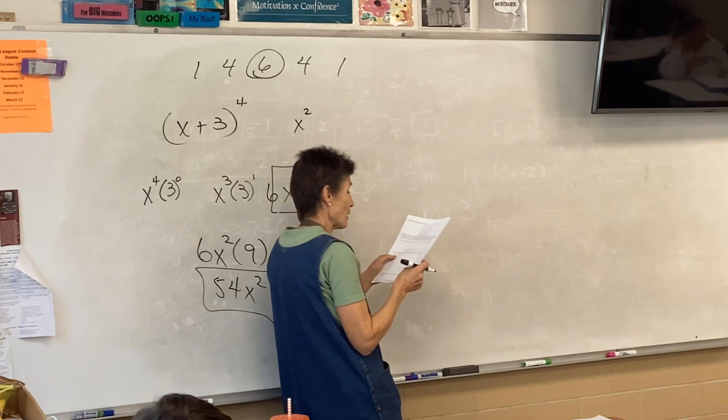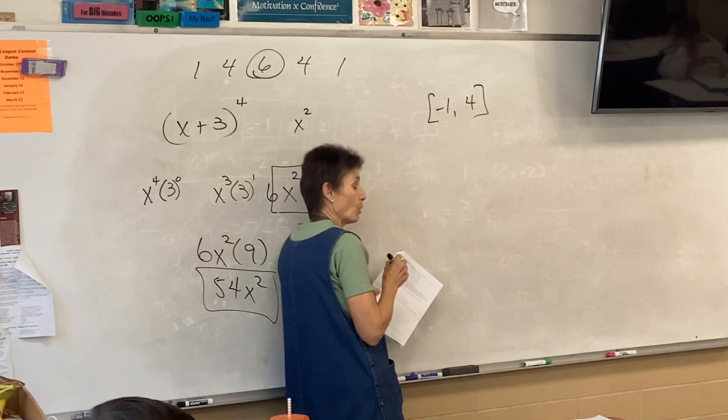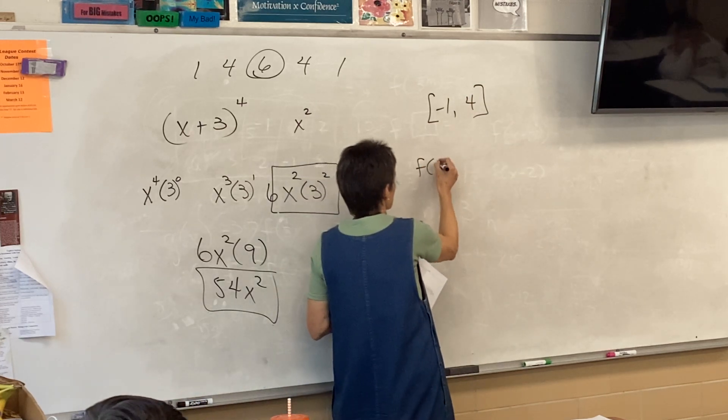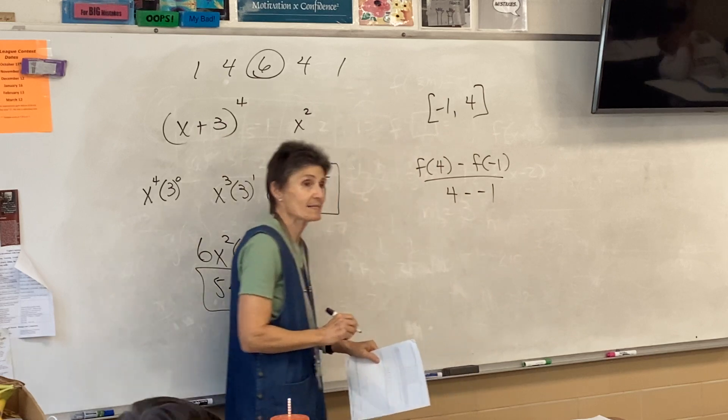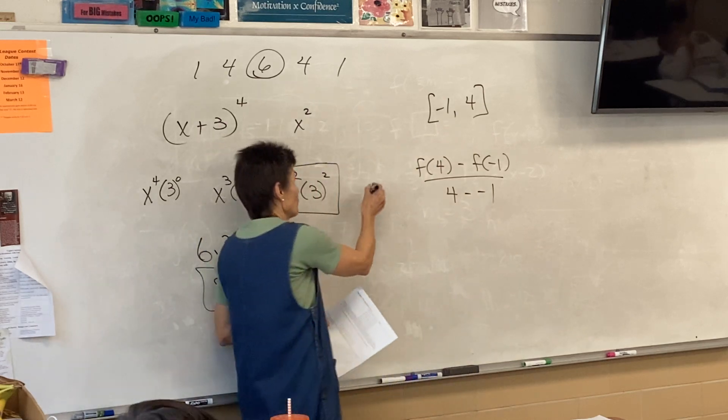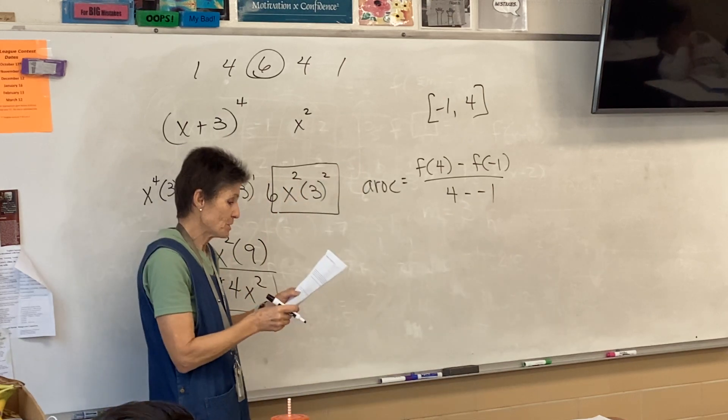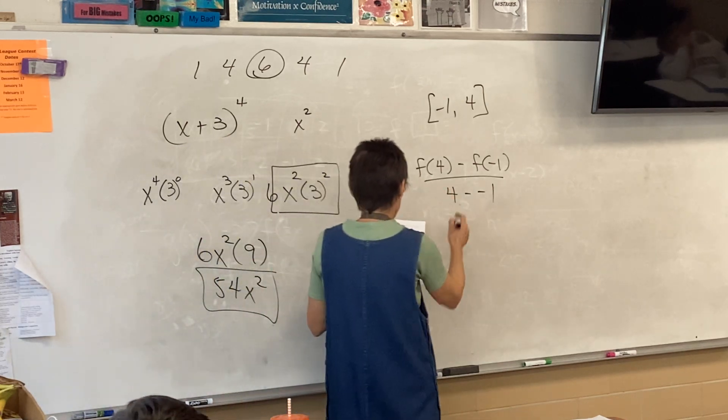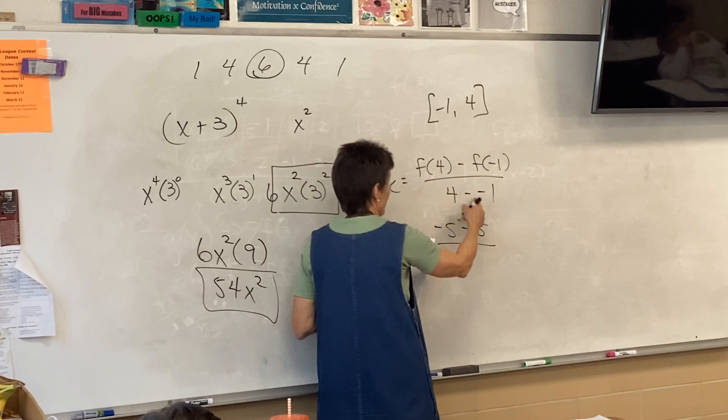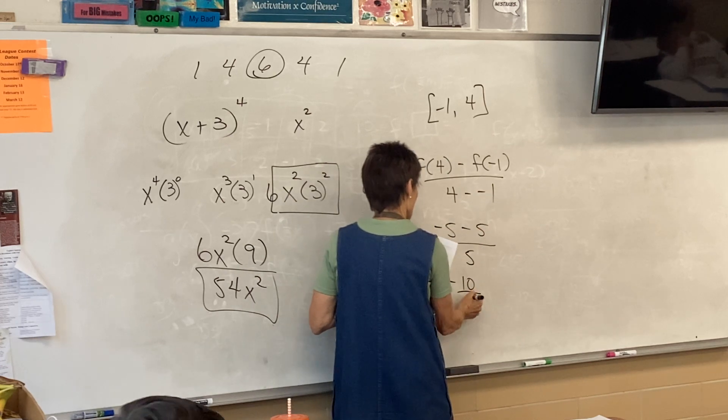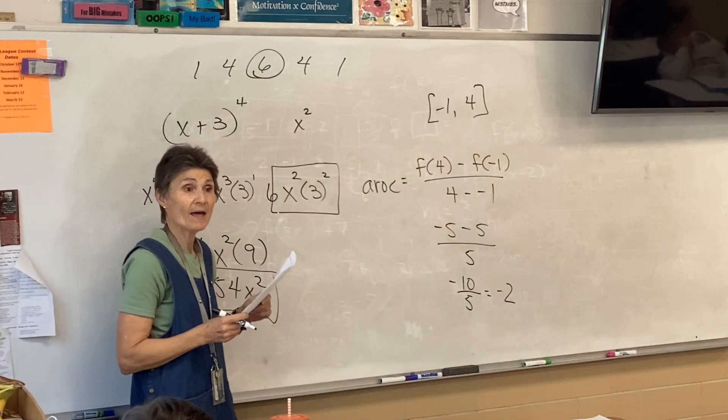But from this table of values, we have to find the average rate of change over the interval from negative one to four. So, the work that we show is f of four minus f of negative one over four minus negative one. That's how we find the average rate of change. Agreed? So, I can look at my chart. f of four is negative five. f of negative one is five. And four minus negative one is five. So, it looks like the average rate of change is negative two on that interval.